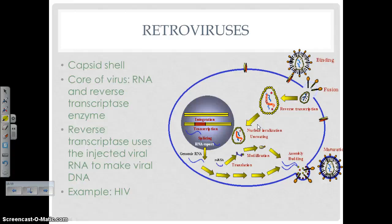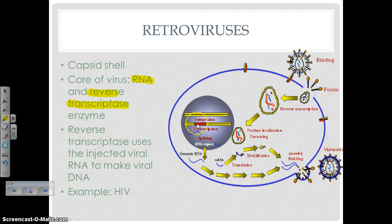Another type of virus to be familiar with is retroviruses. A retrovirus is a virus that has RNA as its nucleic acid core instead of DNA, and it has a reverse transcriptase enzyme. Reverse transcription means going from RNA to DNA — the opposite of normal transcription, which goes from DNA to RNA. The RNA gets injected into the cell, then undergoes reverse transcription to become DNA, which is then used as instructions for making viruses. An example is HIV, which is a retrovirus.